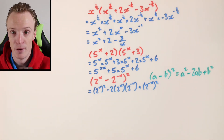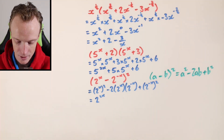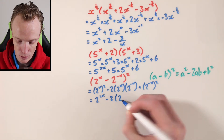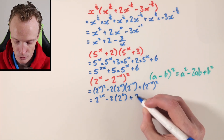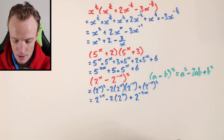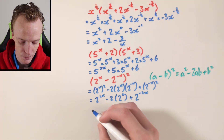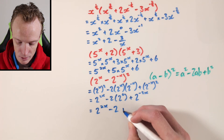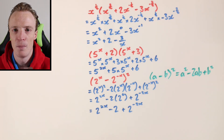From here I can simplify using my index laws. For the first term, I multiply the exponent x by 2, giving 2 to the power of 2x. For the middle term, I keep the base the same and add the exponents: x plus negative x is 0, so that's 2 to the power of 0, which equals 1. So negative 2 times 1 is just negative 2. For the last term, multiplying the exponent negative x by 2 gives 2 to the power of negative 2x. So the final answer is 2 to the power of 2x, minus 2, plus 2 to the power of negative 2x. As you can see, we can apply index laws together with expanding bracket laws, even when indices are rational or variables.